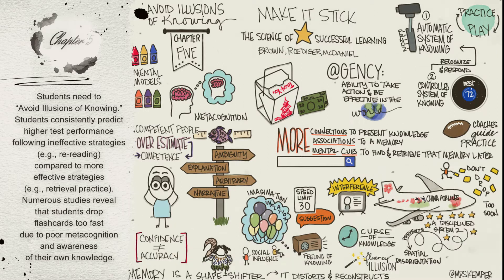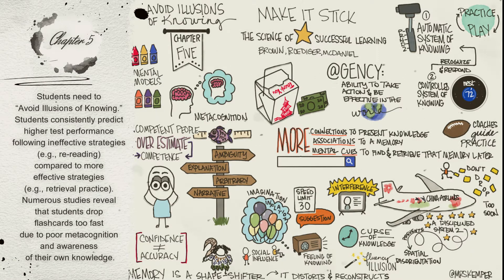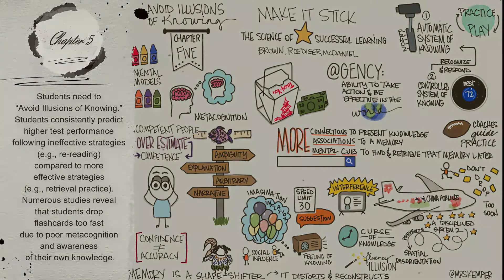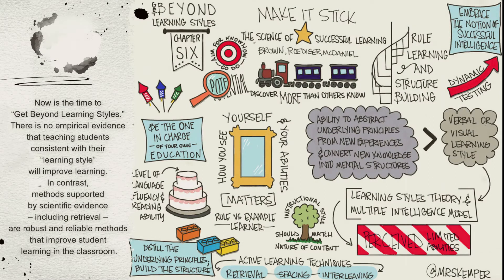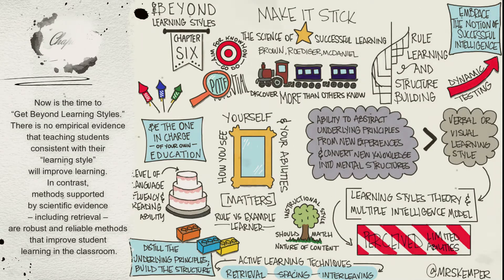Chapter 5: Students need to avoid illusions of knowing. Students consistently predict higher test performance following ineffective strategies — for example, rereading — compared to more effective strategies such as retrieval practice.